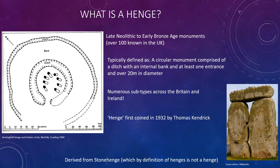Henge was first coined in 1932 by Thomas Kendrick and if you read his paper he's not happy about the term himself. He thought it wasn't a very good phrase to use, but as these things do the word has just stuck. So now we always get into arguments about how the word was derived from Stonehenge, but Stonehenge isn't even a henge by the definition of henge monuments — but that's a different discussion.